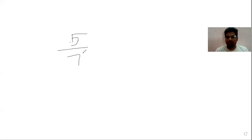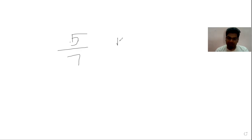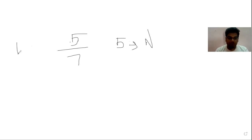How do we classify proper fractions and improper fractions? In a proper fraction, the numerator value will always be less than the denominator value. For example, five by seven — we have five in the numerator and seven in the denominator, so the numerator is less than the denominator, and we call this a proper fraction.